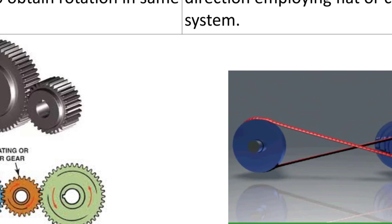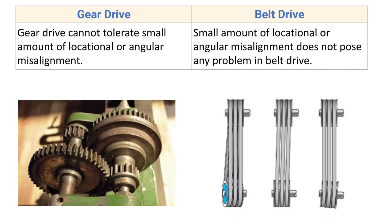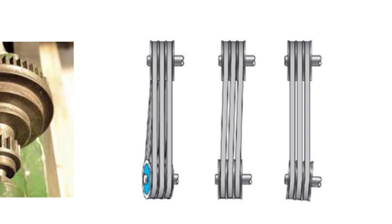Gear drive cannot tolerate small amounts of locational or angular misalignment. The two gears must have perfect alignment to transmit power. Any variation in alignment increases load on the system, increases the wear rate of gear teeth, and ultimately decreases efficiency. In belt drive, small amounts of locational or angular misalignment do not pose any problem, and the belt drive can transmit power with misalignment without any loss in efficiency.